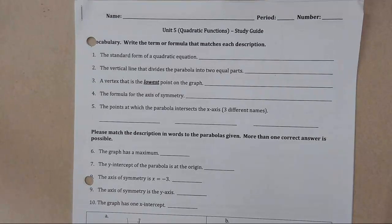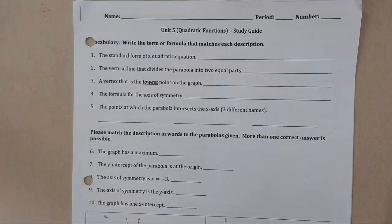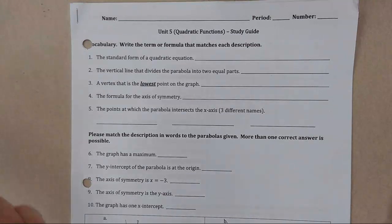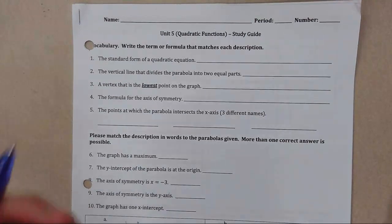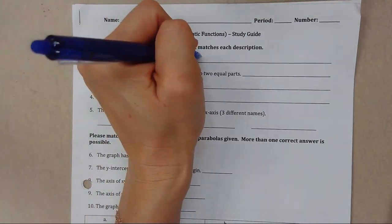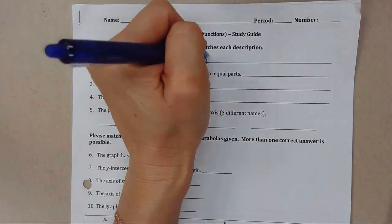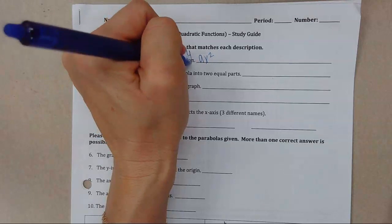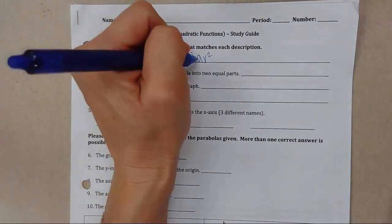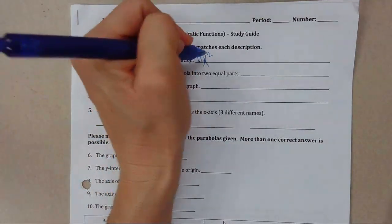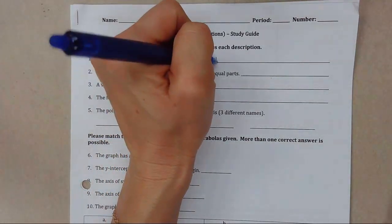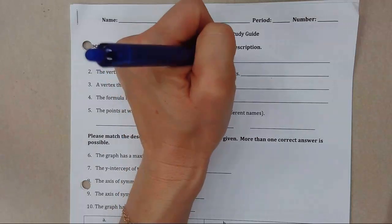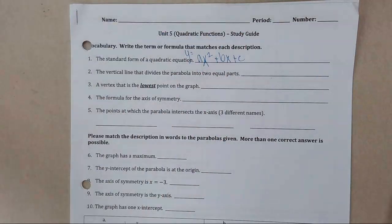All right, guys, here we go. Study guide, Algebra 1, Unit 5: Standard Form of the Quadratic Function is going to be y equals ax squared plus bx plus c.